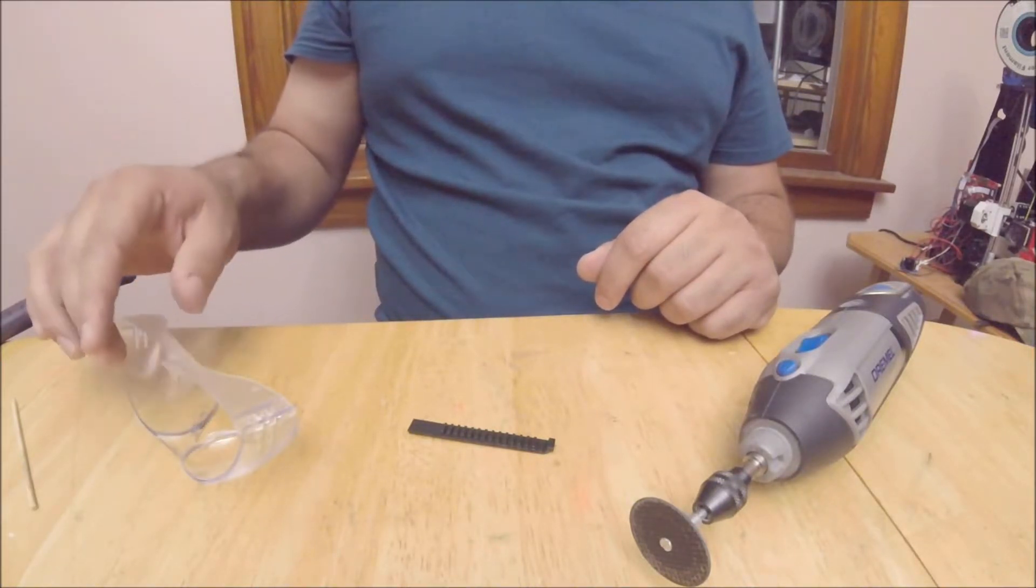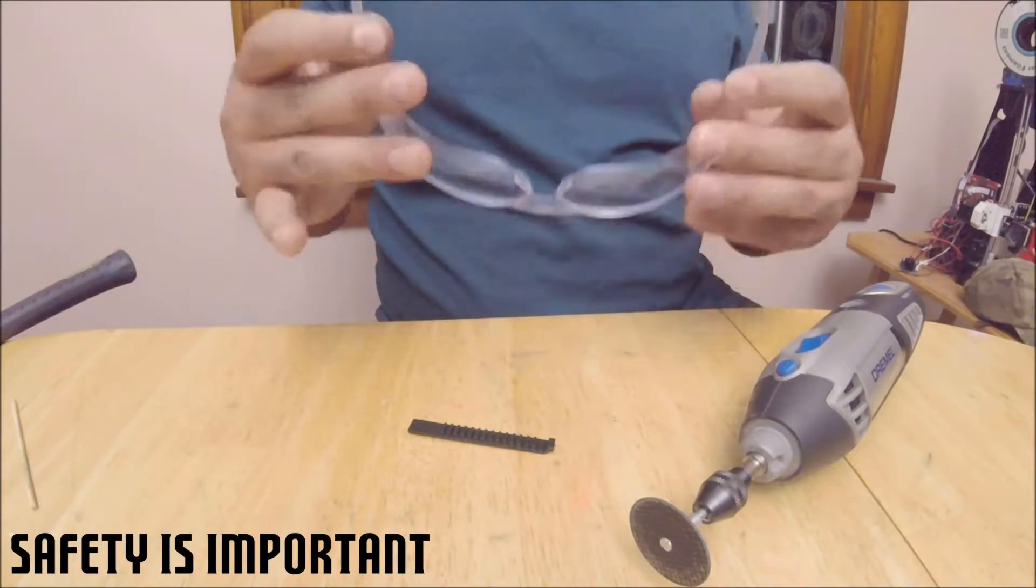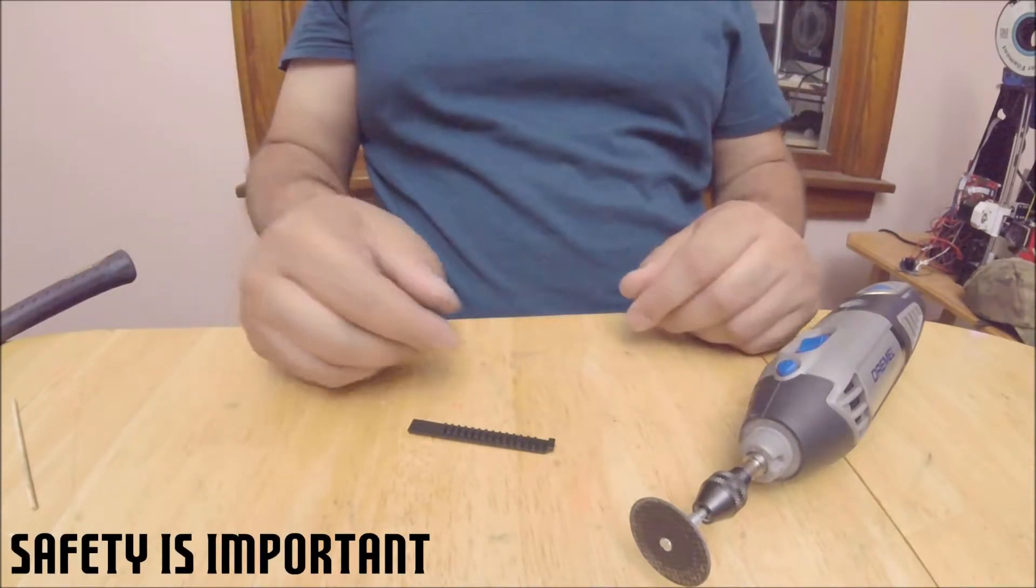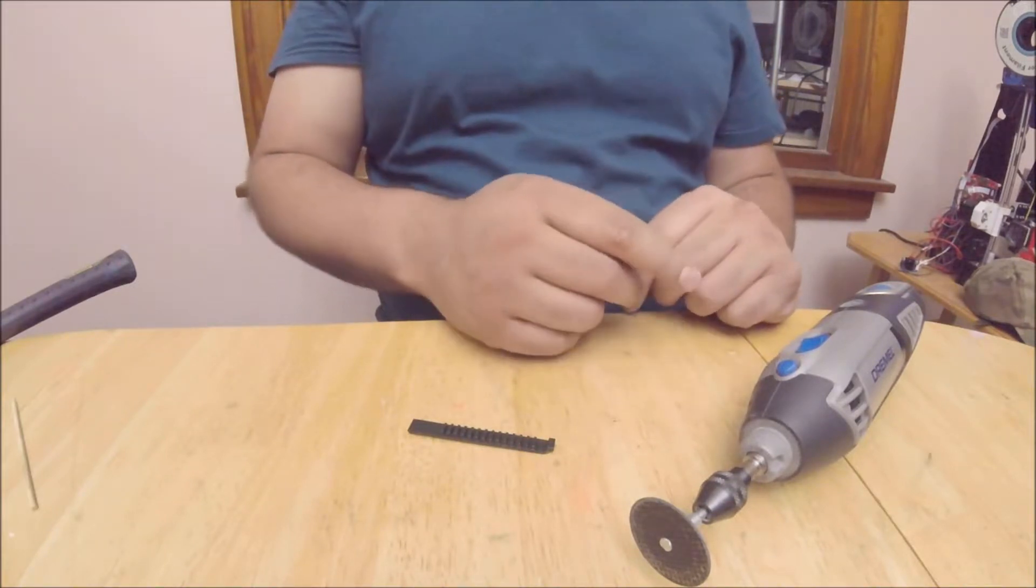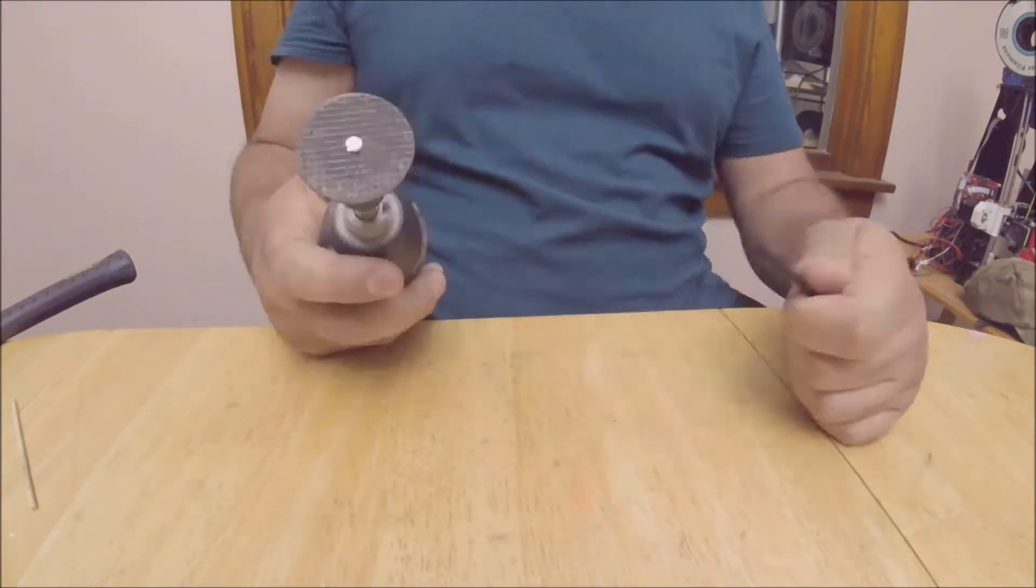Make sure when doing this to have eye protection. To remove what's left of the half tooth, I'm going to use my Dremel and a cutting wheel. Now remember this is steel, so there will be sparks.